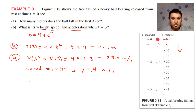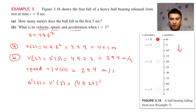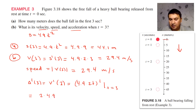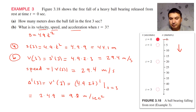Now, how about the acceleration? Acceleration is the derivative of the velocity at t equal to 3. The velocity was 4.9 times 2t, so taking its derivative gives 4.9 times 2 times 1, which is simply a constant. Hence the acceleration is 9.8 meters per second squared — which is the gravitational force. No surprise.